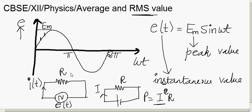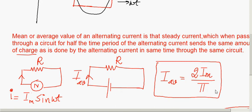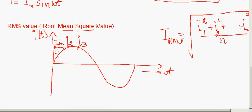Good morning. Continuing from the last session, we were talking about average and RMS value. We finished average value and were discussing RMS value. RMS stands for root mean square. In statistics, you take n samples i1, i2, i3 up to n, square all these values, take the mean, and then take the square root. So root mean square is the square root of the mean of the squares of the instantaneous values over one complete cycle.